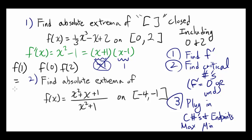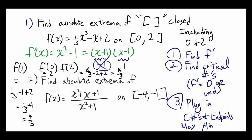f(1) = 1/3 - 1 + 2 = 1/3 + 1 = 4/3. f(0) = 2, since all other terms drop out. f(2) = 8/3 - 2 + 2 = 8/3. Now, 8/3 is the highest, so f(2) gives the maximum — absolute maximum is at x = 2, value 8/3. And 4/3 is the lowest, so absolute minimum is at x = 1, value 4/3.